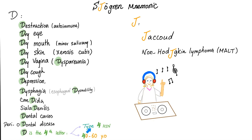D is the fourth letter of the alphabet, so Sjogren's can be considered a type 4 hypersensitivity. It occurs in patients who are 40 to 60 years old, mostly females. J stands for Jaccoud's deformity — we've discussed the difference between Jaccoud's deformity and rheumatoid deformity. J also stands for Non-Hodgkin's lymphoma, the MALT lymphoma, most commonly affecting the parotid glands.